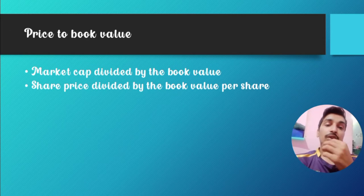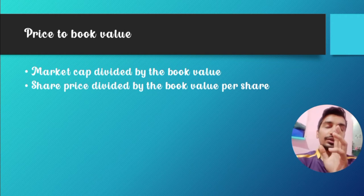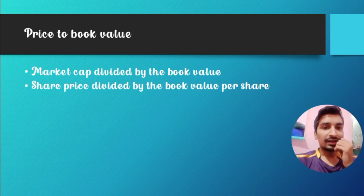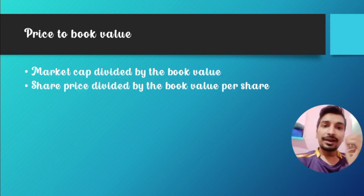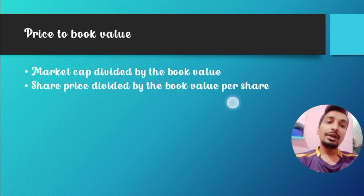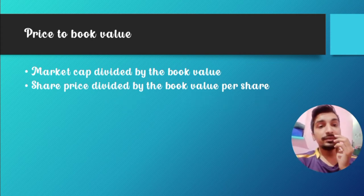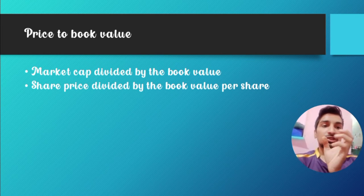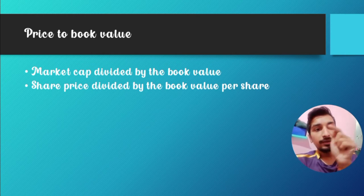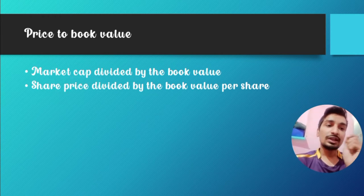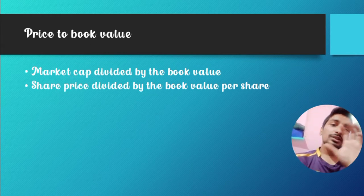Now, what is the price-to-book value? The market cap divided by the book value is the price-to-book ratio. Alternatively, the share price divided by the book value per share gives the same result. If you multiply book value per share by the number of outstanding shares, you get the market cap — so both formulas are equivalent.